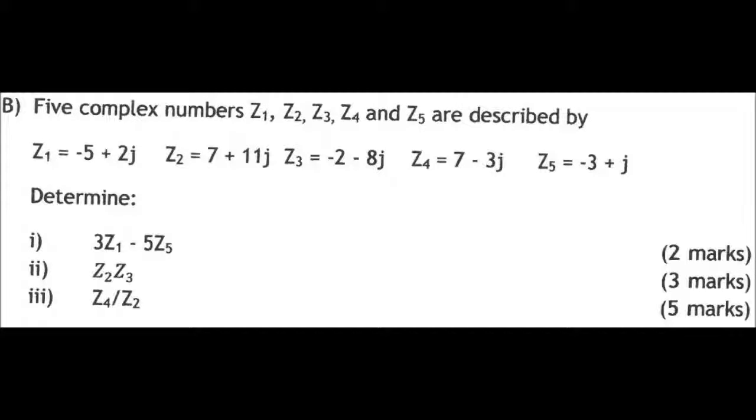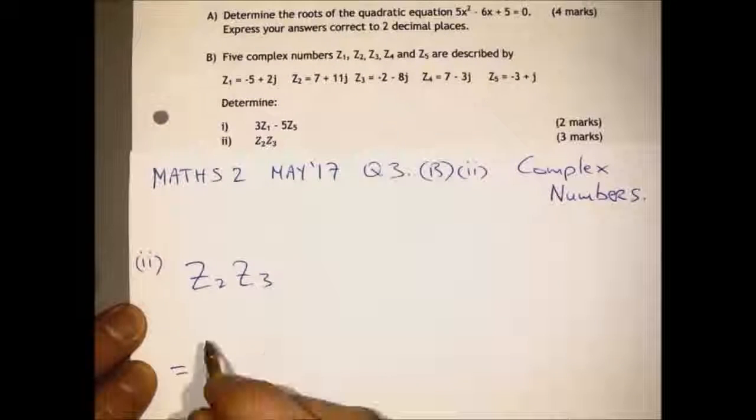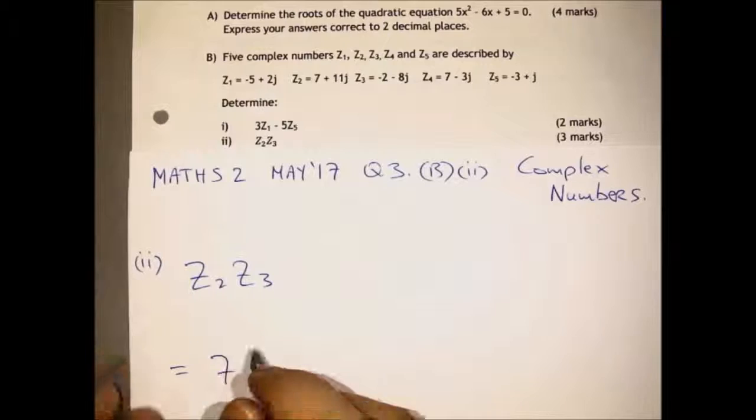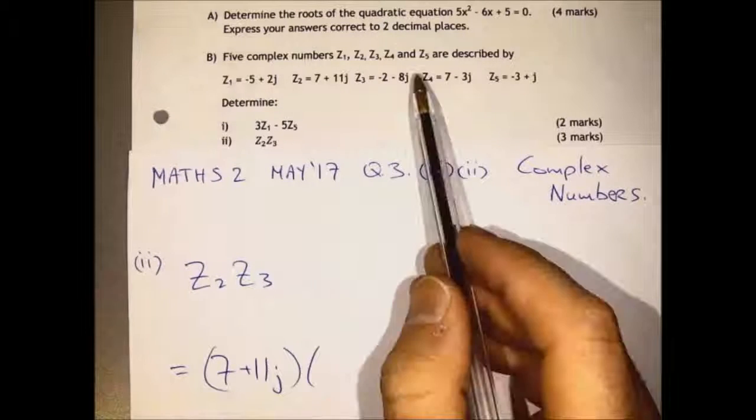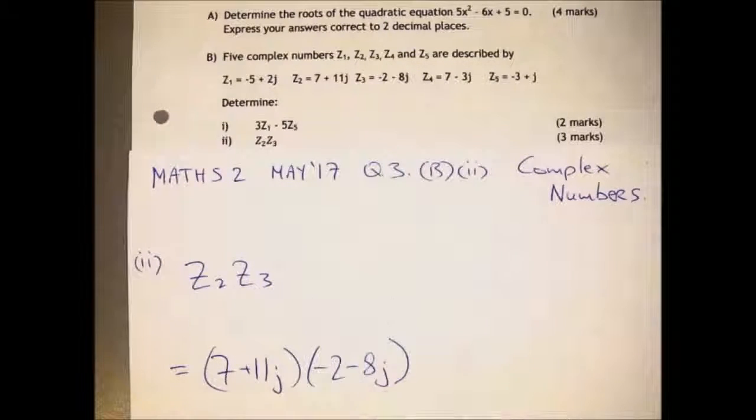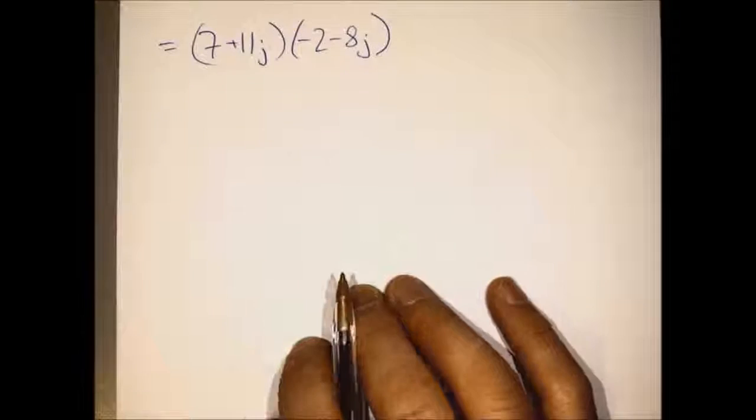You are asked to find the product of Z2 and Z3, or the answer when you multiply Z2 by Z3. So use brackets again. Z2 is 7 plus 11J, and Z3 is minus 2 minus 8J.